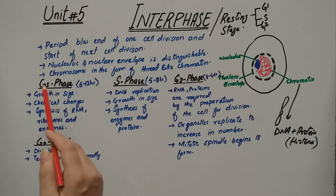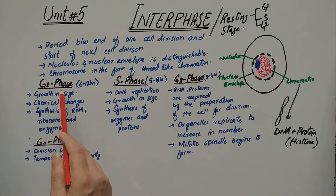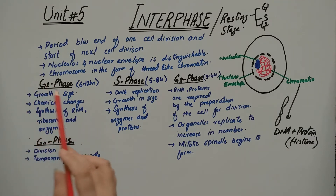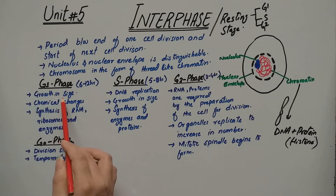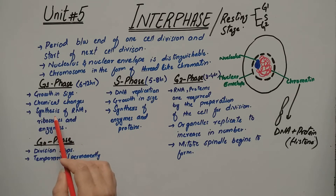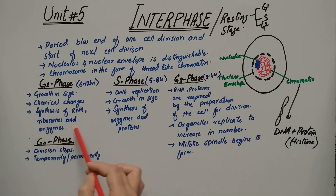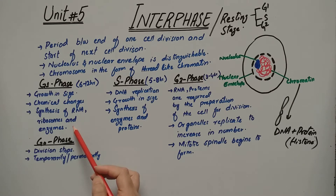G1 is the first and the longest sub-phase of interphase. In this phase, the newly produced cells start growing in size. They also undergo chemical changes. They also require the synthesis of RNA, ribosomes, and enzymes, which help in the growth of the cells and prepare them for DNA replication.